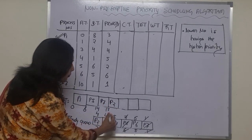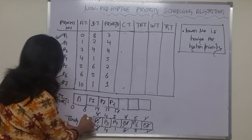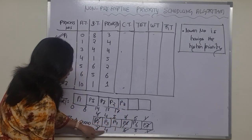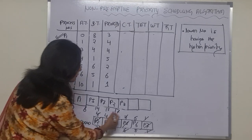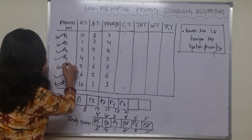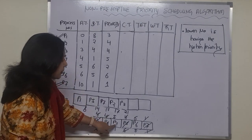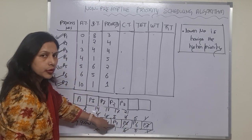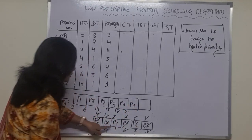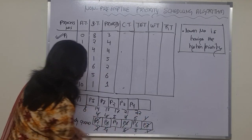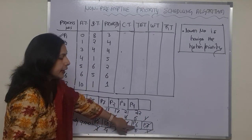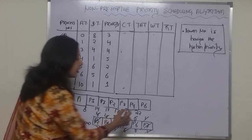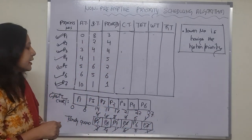P2 has burst time 2, so it runs from 15 to 17 and is completely executed. Next is P3 with burst time 4, running from 17 to 21. Then P4 is selected with burst time 1, running from 21 to 22. Finally, P6 remains with burst time 5, running from 22 to 27. This completes the Gantt chart for the non-preemptive priority scheduling algorithm.